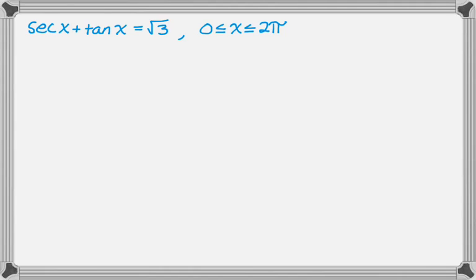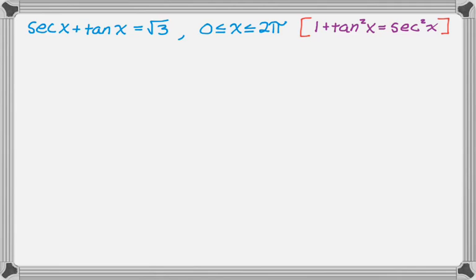Let's look at another problem. Here I have secant of x plus tangent of x equals radical 3, where x is between 0 and 2 pi. There's a little trouble because secant and tangent have a relationship, but it involves squares: 1 plus tan squared equals secant squared. So I need to get squares involved and square both sides. First I'll rearrange it, because if I square it as-is I'll end up with a secant-tangent cross term, and I don't want that. These are the sorts of things you learn with practice or trial and error.